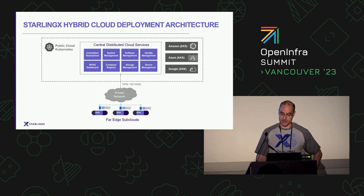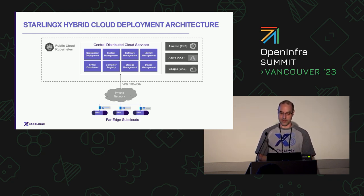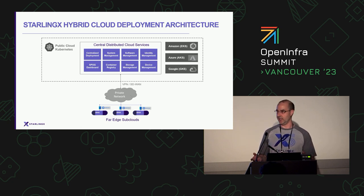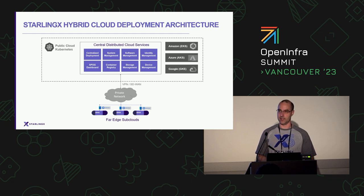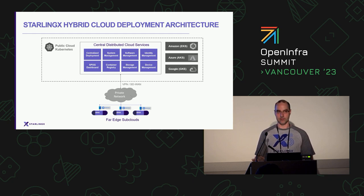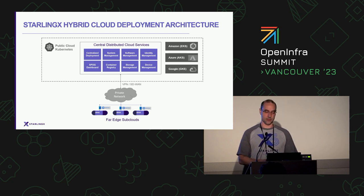One of the enabling functions is that we want to be able to migrate from our existing regional controllers to public cloud, or back, depending on operator requirements. If they want to start with physical infrastructure because they're not ready to invest in public cloud, they can do that. We already have the ability to migrate subclouds between different system controllers, so migrating from on-prem to public cloud is something we can support.